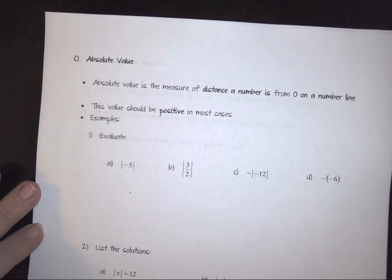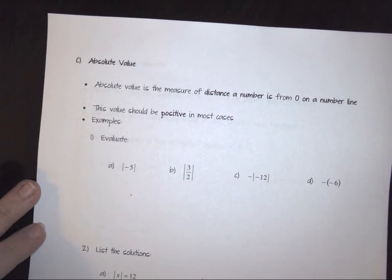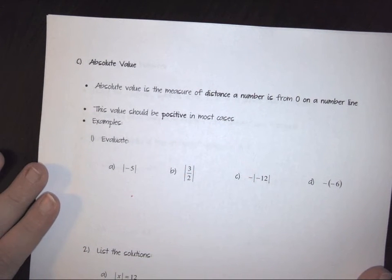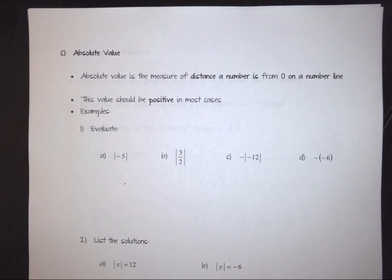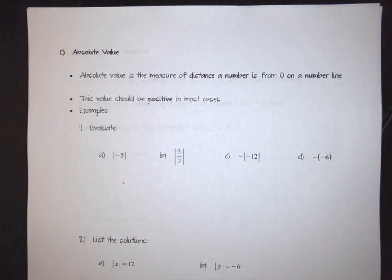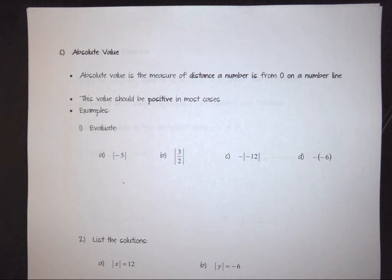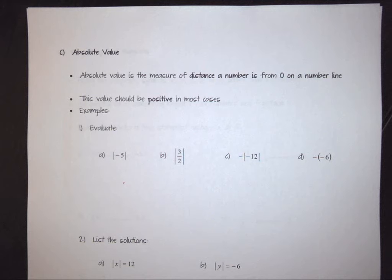Absolute values are one of my favorite things to teach. The absolute value is a measure of the distance a number is from zero on a number line. The basic rule for absolute value says that the result should always be positive — whether you enter a positive or negative value, you come out positive either way.